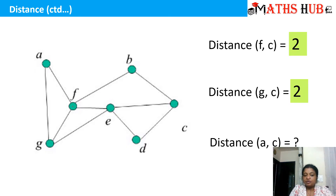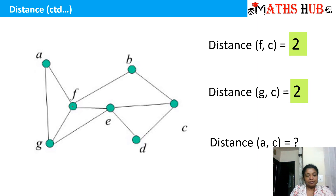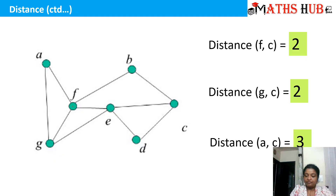Likewise, what is the distance between vertices A and C? One connectivity is A to F, F to B, B to C. Then we have A to G, G to F, F to E, E to D, E to C. There is also A to F, F to E, E to C, and many others. The shortest path is A to F, F to E, and E to C, so the length of that path is 3. This was all about distance.